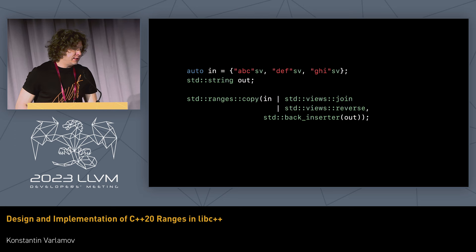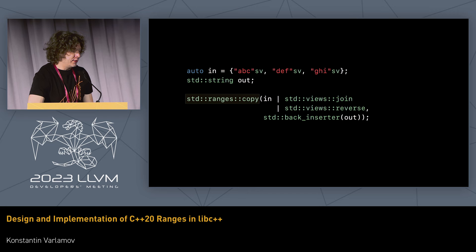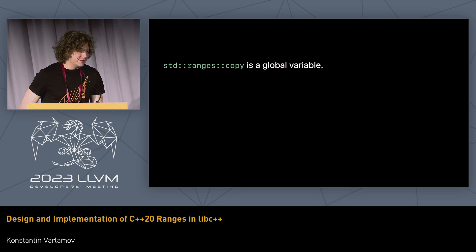Going back to our example: there's quite a bit happening under the surface to provide this ergonomic interface. Let's take a look at std::ranges::copy. We know std::copy is a free function, and std::ranges::copy also looks just like a call to a free function. But in reality, ranges::copy is actually a global variable — and that might be quite surprising.